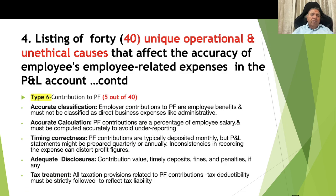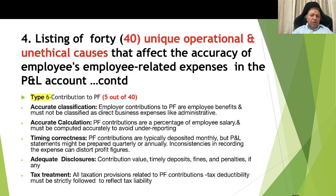Type 6, contribution to provident fund: there are 5 causes which can lead to incorrect reporting. One is accurate classification: employee contribution to PF must be classified correctly as direct business or administrative expenses. Two is accurate computation: PF contributions are a percentage of employee salary and must be computed accurately to avoid under-reporting. Three is timing correctness: PF contributions are typically deposited monthly but the P&L statement might be prepared quarterly or annually — inconsistency in recording can distort profit figures. Four is adequate disclosures: contribution value, timely deposit, and any fines or penalties need to be reported. Five is tax treatment: all taxation provisions related to PF contributions and tax deductibility must be strictly followed.